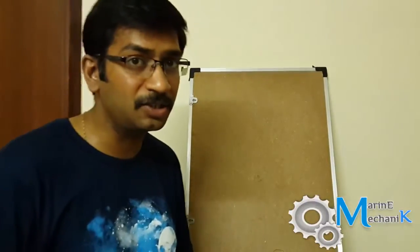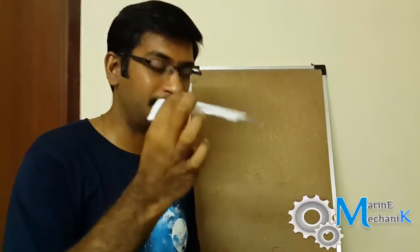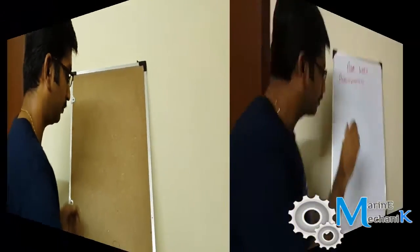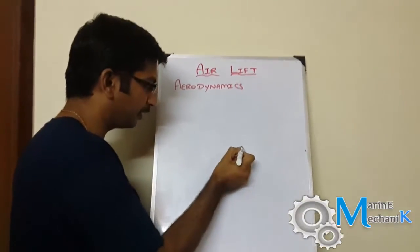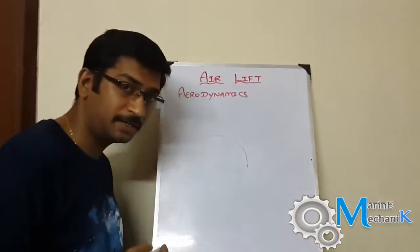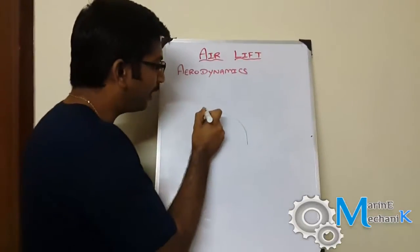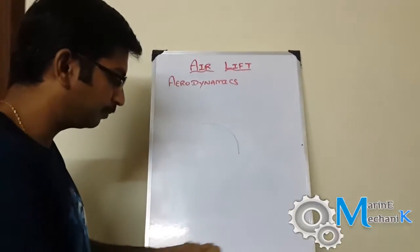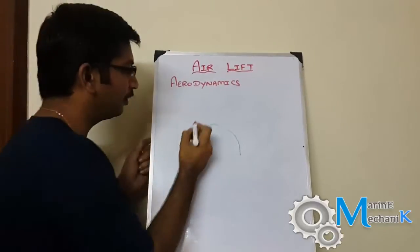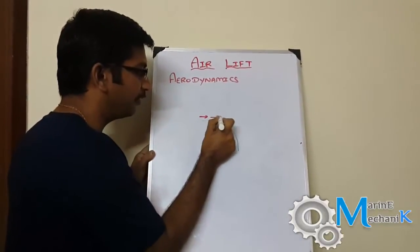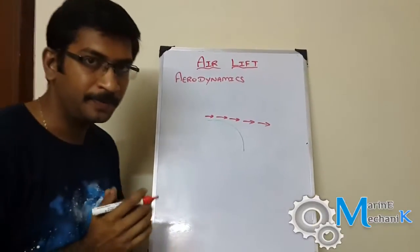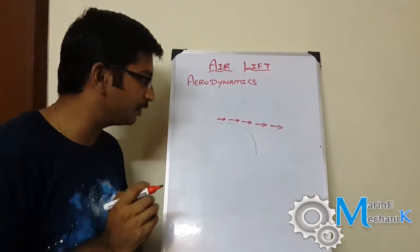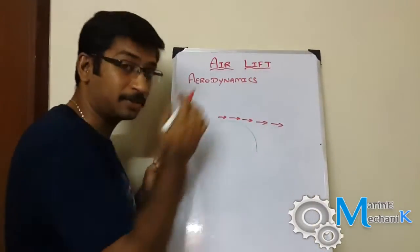Now we're going to relate aerodynamics airlift with this paper lift. Let's assume the paper is dropping like this. When I blow air on top of it, I will indicate with the red mark the direction of airflow. When I blow on top of it, the paper is lifting—but how?